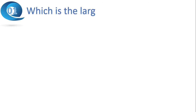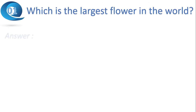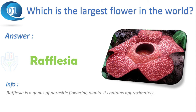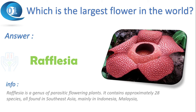First question: which is the largest flower in the world? Answer: Rafflesia. It is a genus of parasitic flowering plants; it contains approximately 28 species, all found in Southeast Asia, mainly in Indonesia, Malaysia, Thailand and the Philippines.